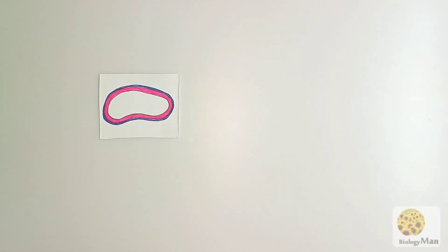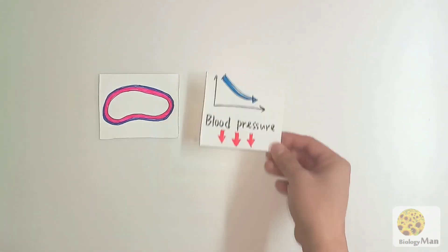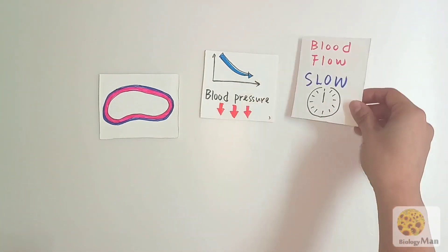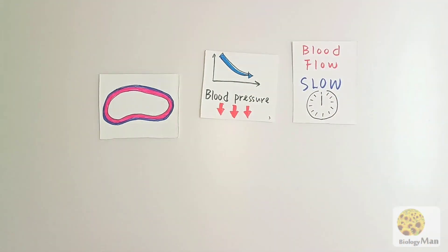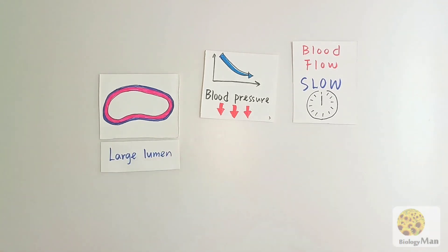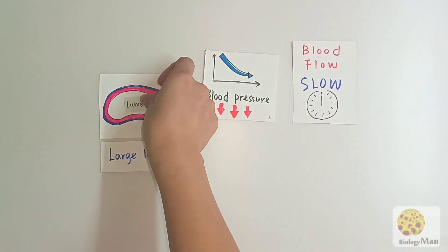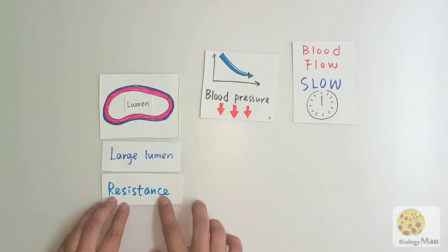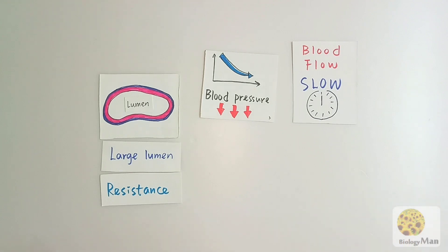There are other features of veins that help them perform their function of sending blood back to the heart. Inside the vein, blood pressure is low and blood flow velocity is low as well. To keep the function working, the vein has a large lumen — the space that allows blood to pass through. A large lumen provides low resistance, allowing blood to flow more easily.